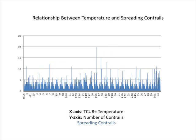This graph shows the relationship between temperature and spreading contrails. The x-axis is the current temperature and the y-axis is the number of contrails. We have concluded from this graph that the range from 16 to 19 degrees Celsius showed the most contrails recorded. This graph again surprised us, as we were looking for a gradual increase or decrease in the data.